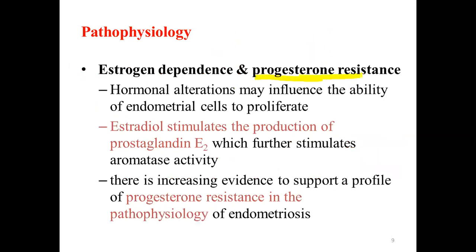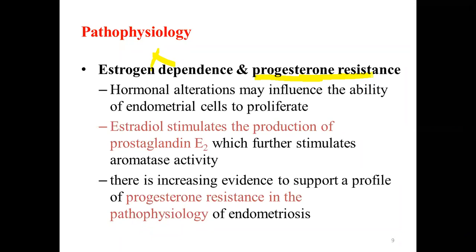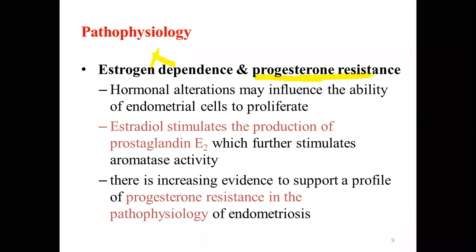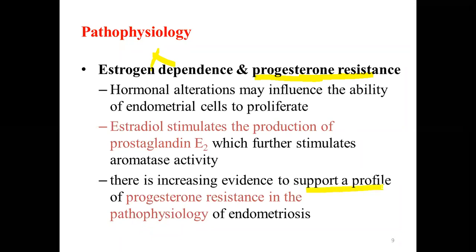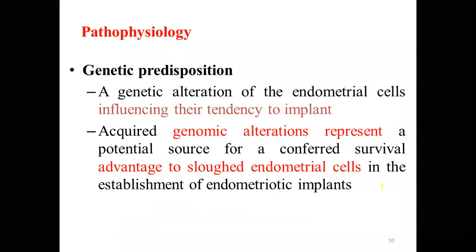Another theory is progesterone resistance. Estrogen promotes proliferation, however progesterone normally inhibits the proliferation of endometrial cells. When there is progesterone resistance — when progesterone is not working at its site of action — there is unblocked action of estrogen, which ultimately causes endometriosis. There is increasing evidence supporting progesterone resistance in the pathophysiology of endometriosis because it cannot prevent the proliferative reaction of estrogen. There is also genetic alteration that predisposes survival of endometrial cells and increases their implantation.